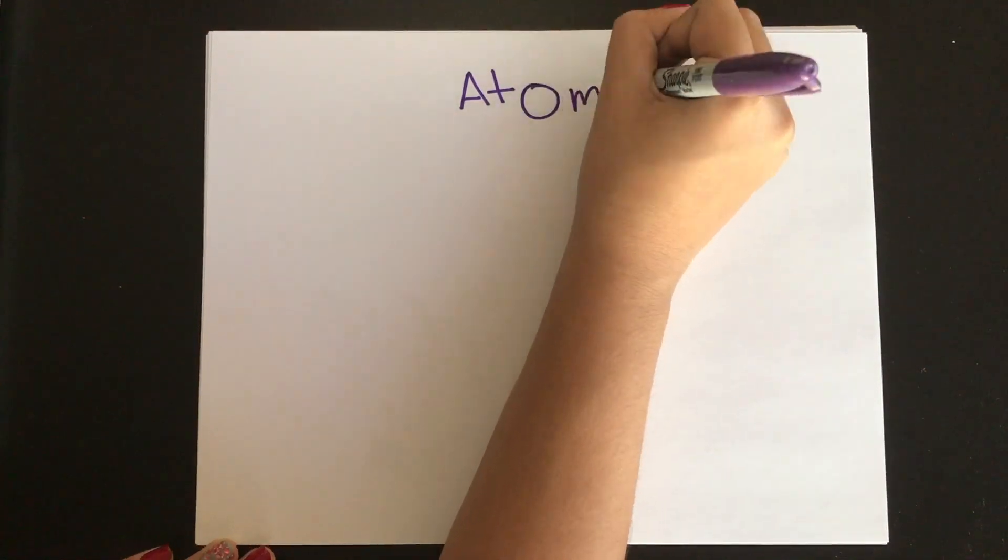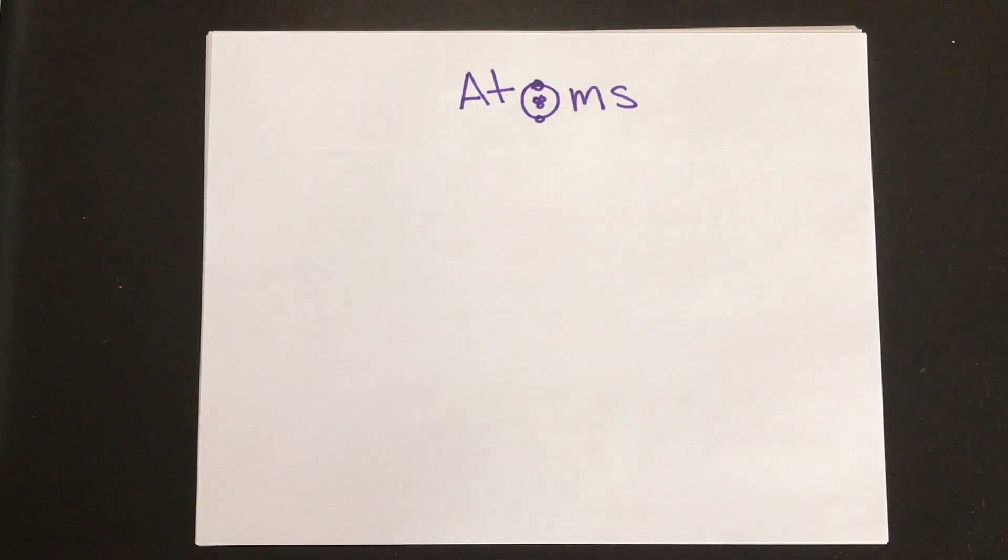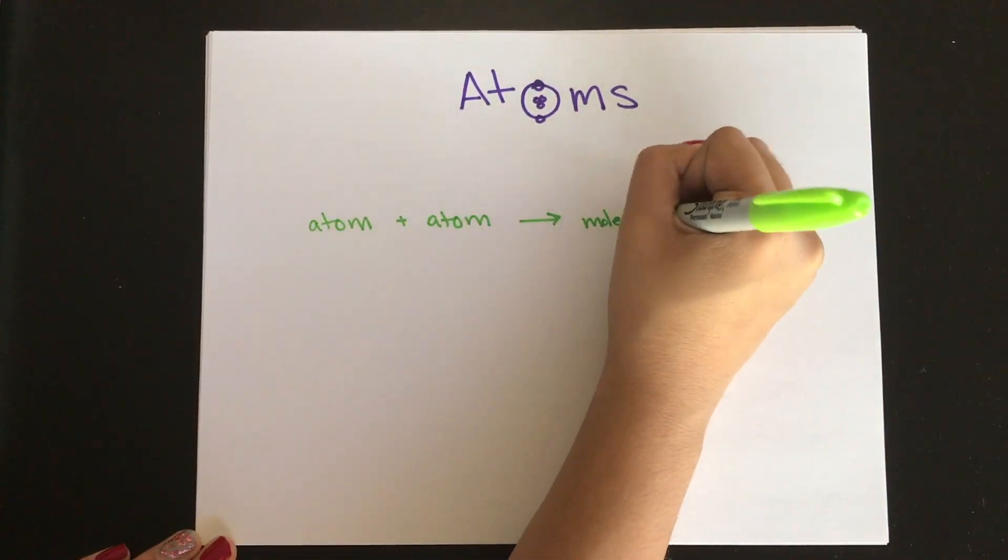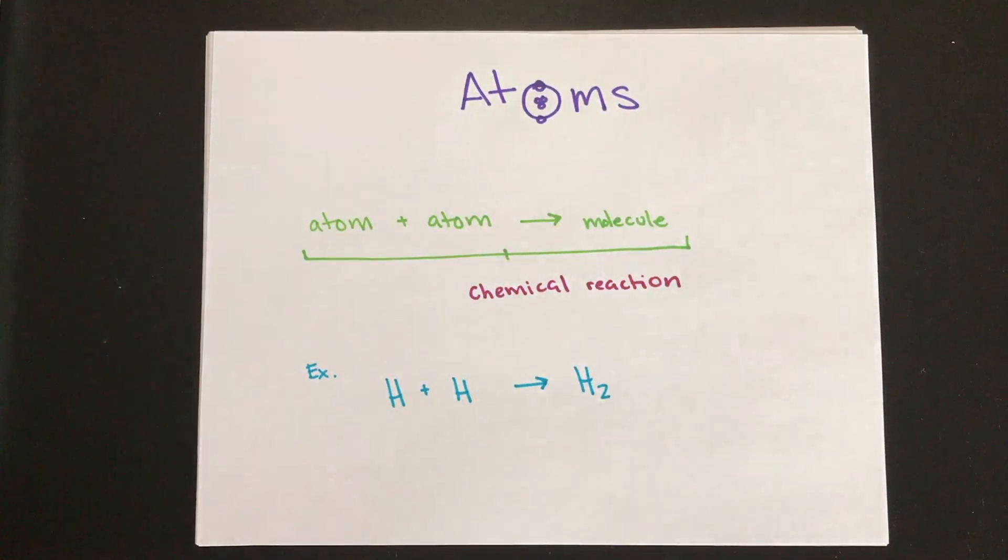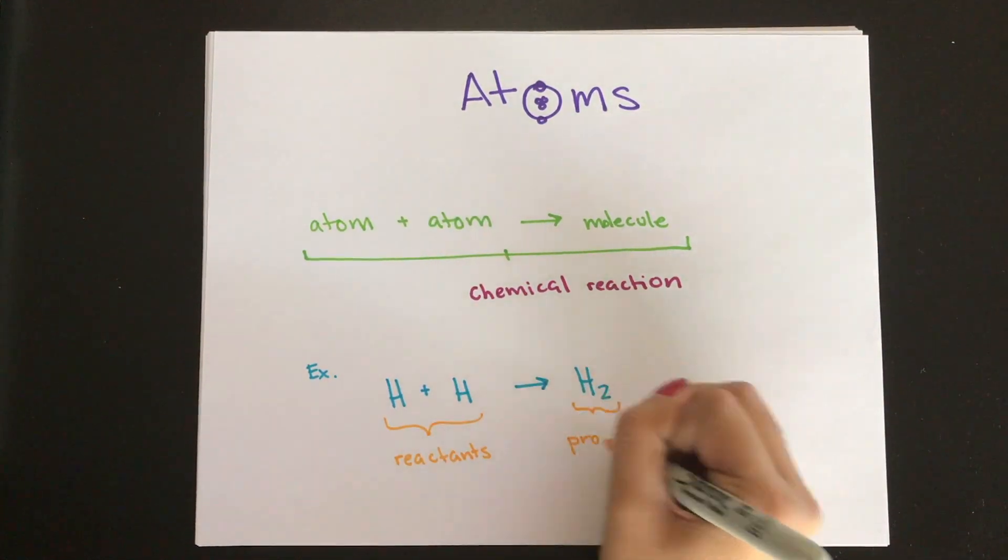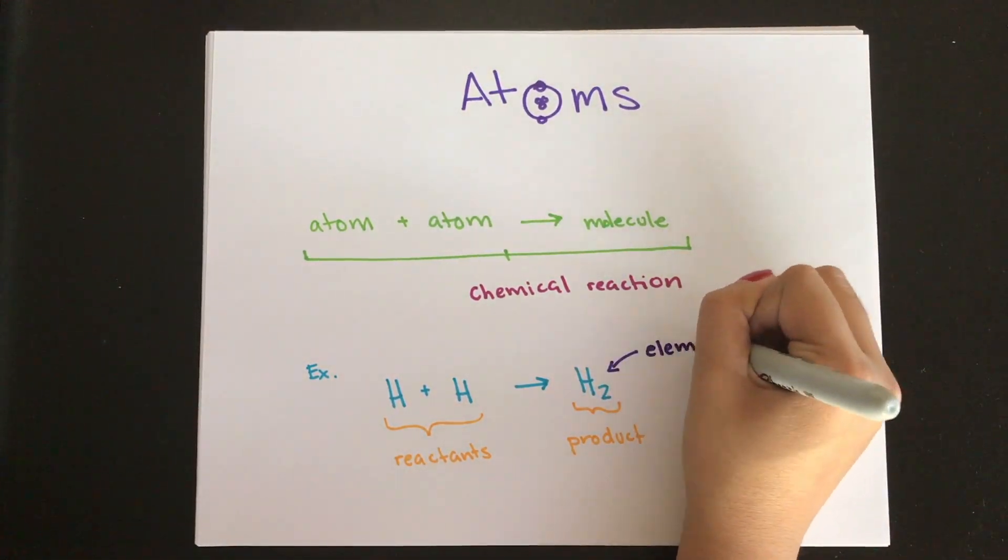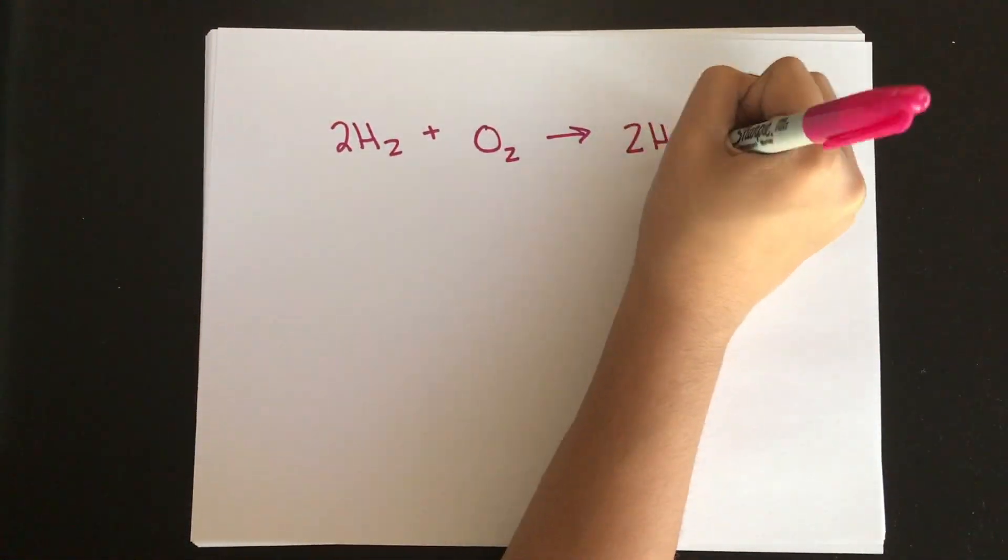So we'll start off with atoms. Atoms are the fundamental units of the physical world, and they combine via chemical reactions and become molecules. Now if a molecule only has one type of atom, it is considered an element and not actually a molecule, and molecules with different types of atoms are known as compounds.